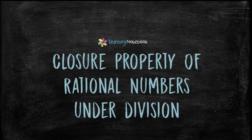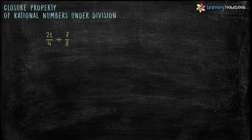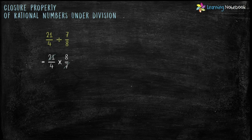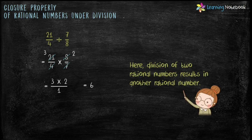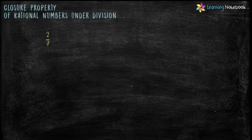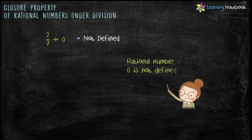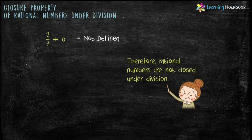Now let's see closure property of rational numbers under division. First example: divide 21 by 4 by 7 by 8, which equals 21 by 4 into 8 by 7. Simplify it and we get the answer as 6 — division of two rational numbers gives another rational number. Second example: divide 2 by 7 by 0, which is not defined. So a rational number divided by 0 is not defined. Therefore rational numbers are not closed under division. However, if we exclude 0, then the collection of all other rational numbers is closed under division.